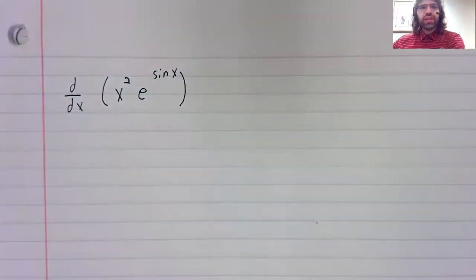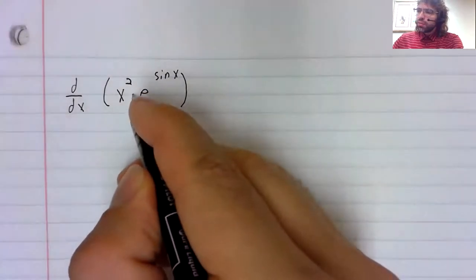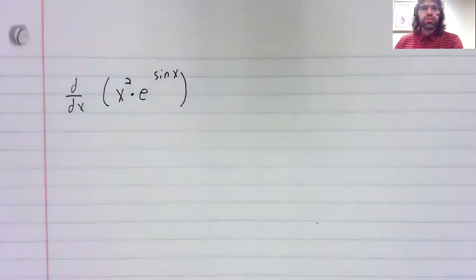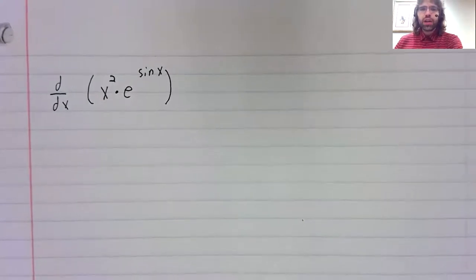Let's differentiate x squared times e to the sine of x. We'll observe first of all that this is a product, so we need a product rule here.